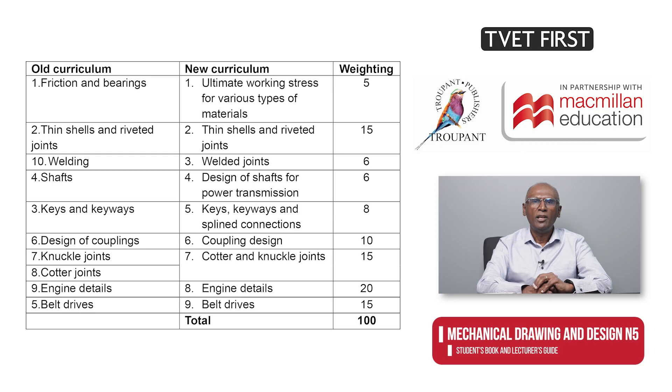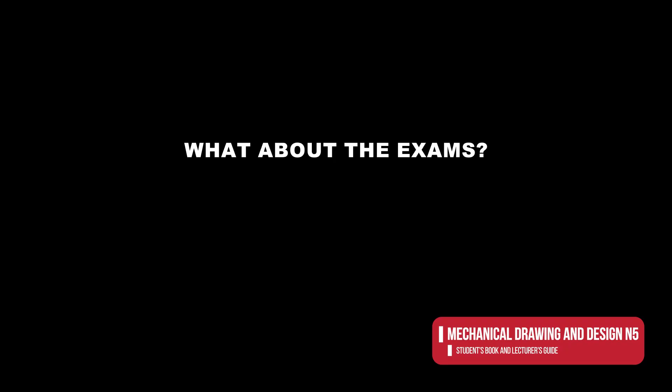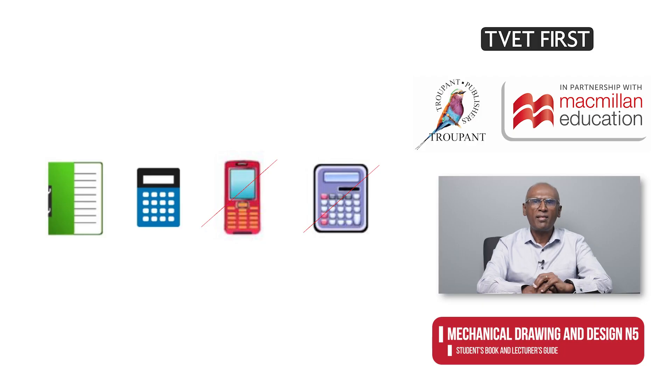What is the weighting of the nine modules? The weighting is visible on the screen now. The mark allocation for exams will follow the weighting of the modules. It is an open book four-hour exam which counts 100 marks. Students may use their notes and scientific calculators. However, no cell phones or programmable calculators are allowed.